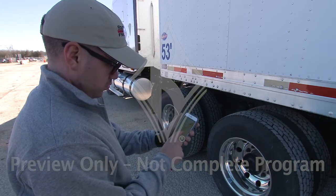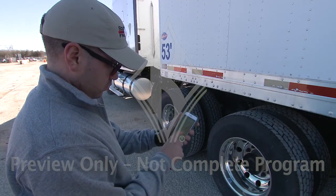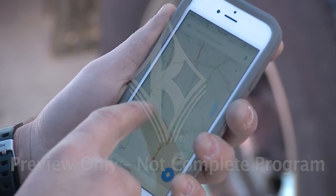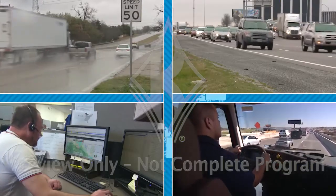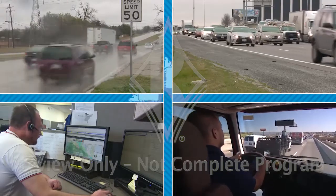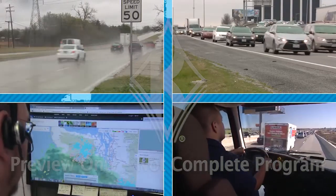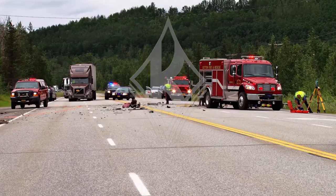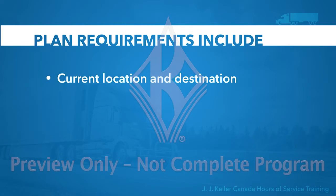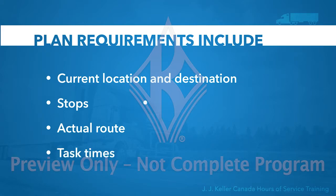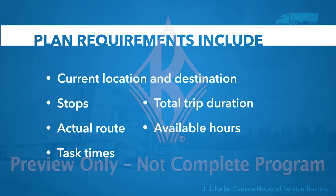A good trip plan involves creating a vision of how the day should go. Experienced trip planners plan for the unexpected. You can know things like the weather forecast, planned detours and road construction, common rush hour traffic in larger cities, and established speed limits — but some things you just can't plan for. There are several details you need every time you complete a trip plan, including your current location and destination, where you want or need to stop, your actual route, how long each task will take, the total trip duration, and the number of hours you have available.